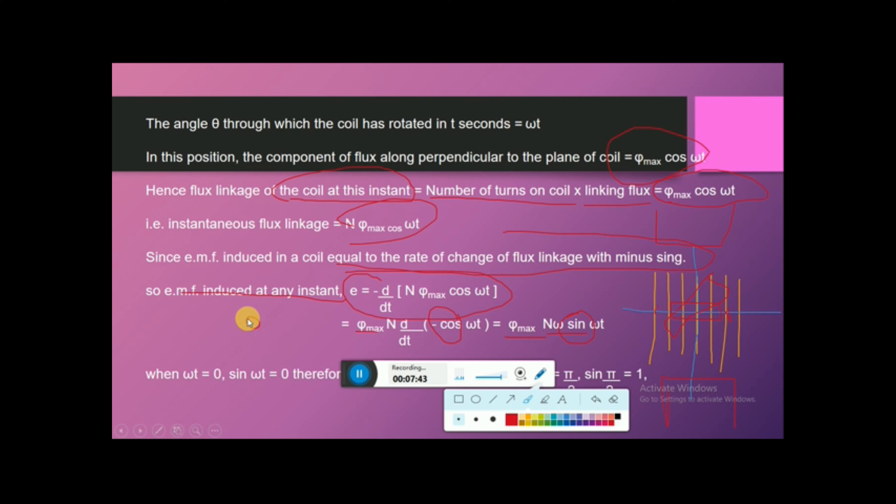When the coil makes an angle theta equal to 90 degrees, the flux linkage is zero because the magnetic field lines are parallel. But the rate of change is maximum, so maximum EMF is induced in this position. Substituting omega t equals 90 degrees, EM equals N omega phi M, and E equals EM sin theta.